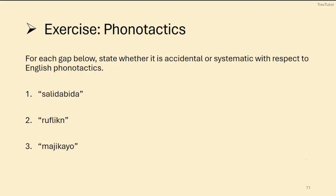With these fake words, let's see if the gaps are accidental or systematic according to English phonotactics. The best approach is to try to pronounce them — if it's easy, it's an accidental gap; if it's very difficult, it's usually systematic. 'Salidabita' — this is an accidental gap. We could have it as an English word because it doesn't violate any phonotactics: consonant-vowel patterns throughout, that's fine. 'Rufflicking' — it's not too bad at the beginning, but we can't do a 'kn' cluster at the end; phonotactics doesn't allow ending words in 'kn,' only 'nk.' So this is systematic.